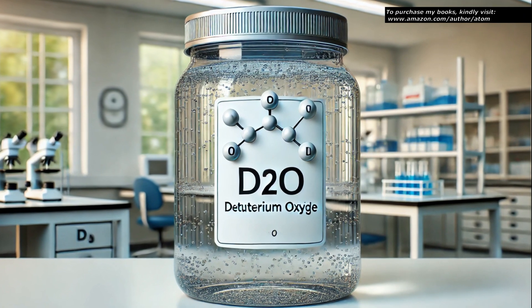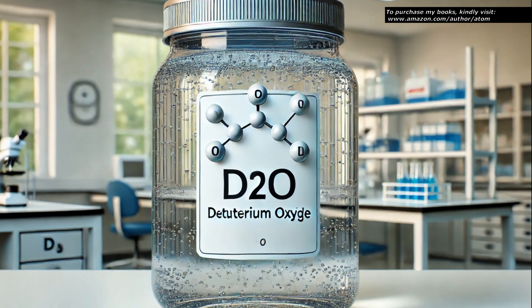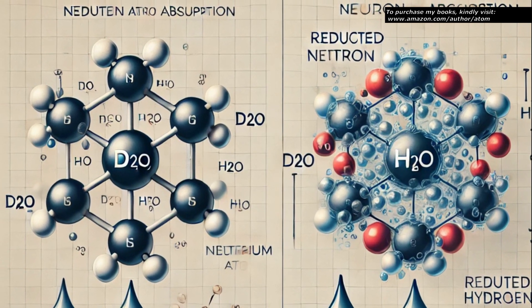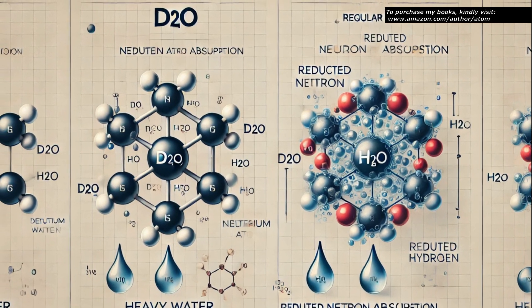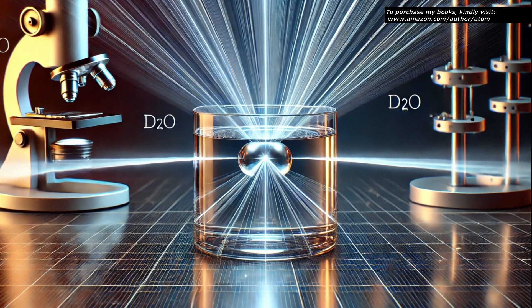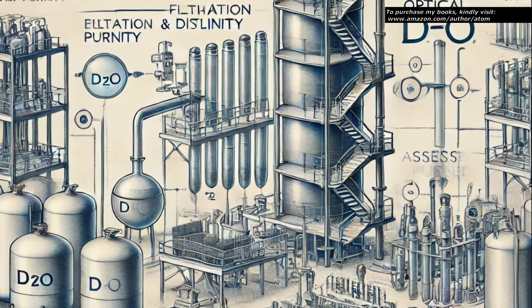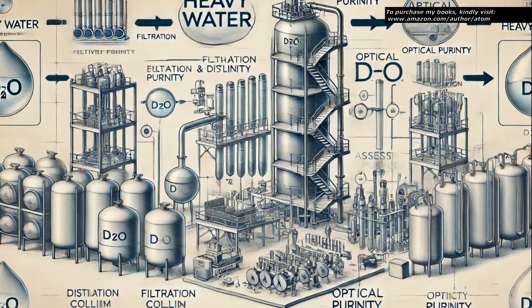The medium chosen for the experiment is optically pure heavy water, or deuterium oxide. Heavy water is selected because it has reduced neutron absorption compared to regular water, which minimizes background noise from neutron interactions. It also possesses excellent optical properties, making it ideal for interferometry. The heavy water is meticulously purified to remove any impurities that could affect optical clarity.